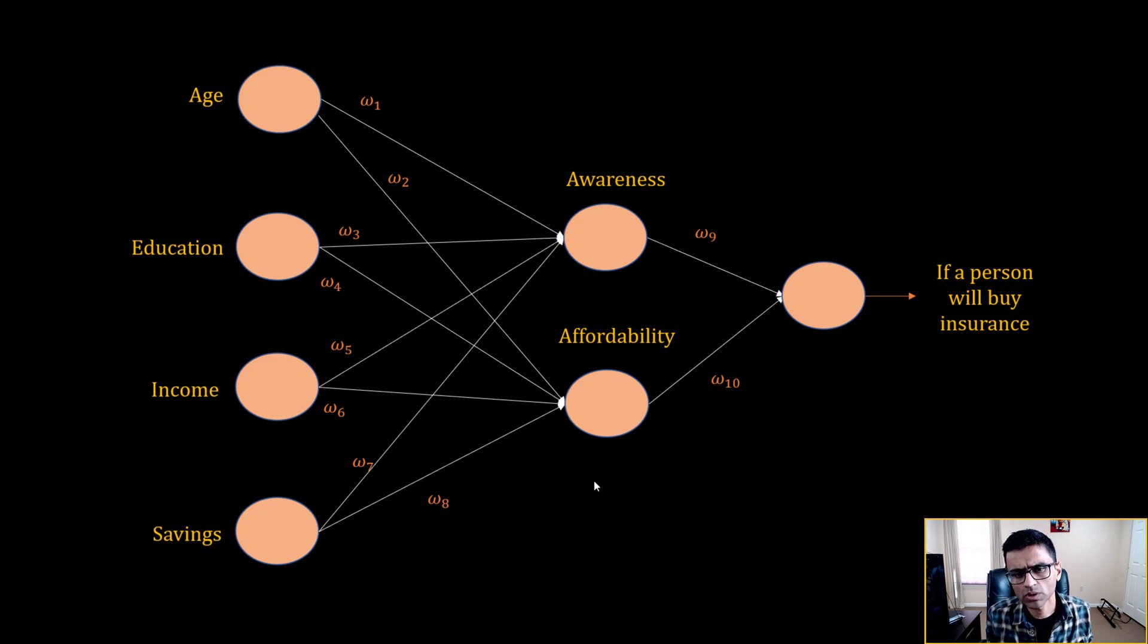Here I have a simple neural network that tries to predict if a person will buy insurance or not based on factors such as age, education, income, and so on. When you think about hidden layers, these hidden layers are extracting some features. For example, age and education might affect awareness, income and savings might affect affordability.